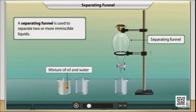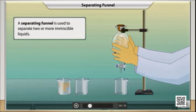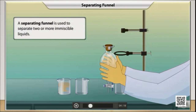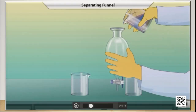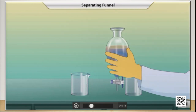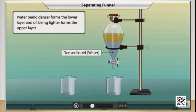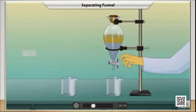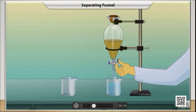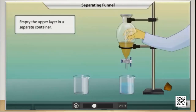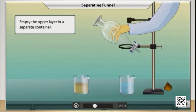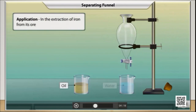A separating funnel is used in laboratories to separate two or more immiscible liquids. Pour the mixture of oil and water into the separating funnel. Water, being denser, forms the lower layer and oil, being lighter, forms the upper layer. Open the tap at the bottom to let the water run out, then empty the upper layer into a separate container. The principle used for separation of immiscible liquids is also used in the extraction of iron from its ore.